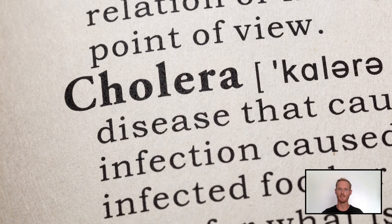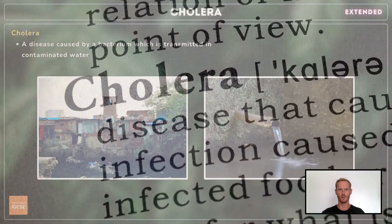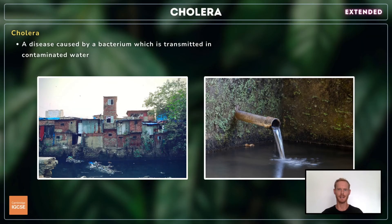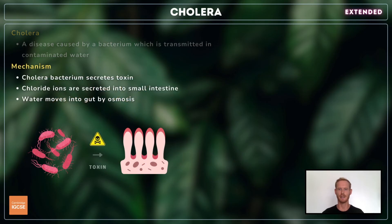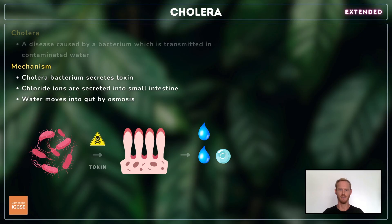You need to know about one specific transmissible disease. Cholera is a disease caused by a bacterium which is transmitted in contaminated water. When the bacteria are ingested, they reproduce and invade the epithelial cells of the small intestine. They release toxins that irritate the intestinal lining, resulting in the secretion of large quantities of water and salts, including chloride ions. The ions draw even more water into the gut by osmosis, causing serious diarrhoea, dehydration, and even kidney failure.